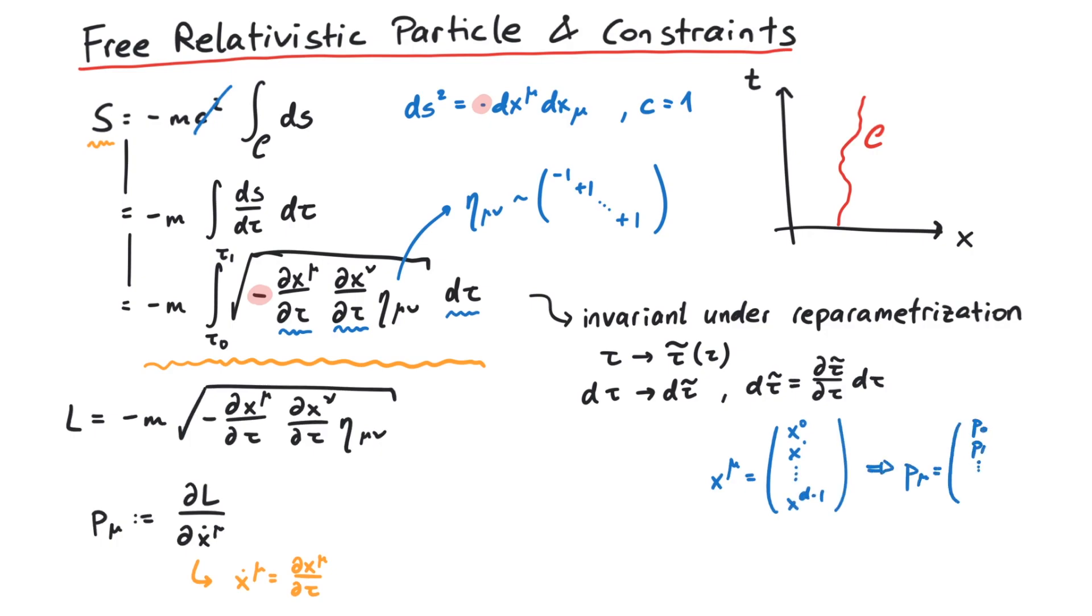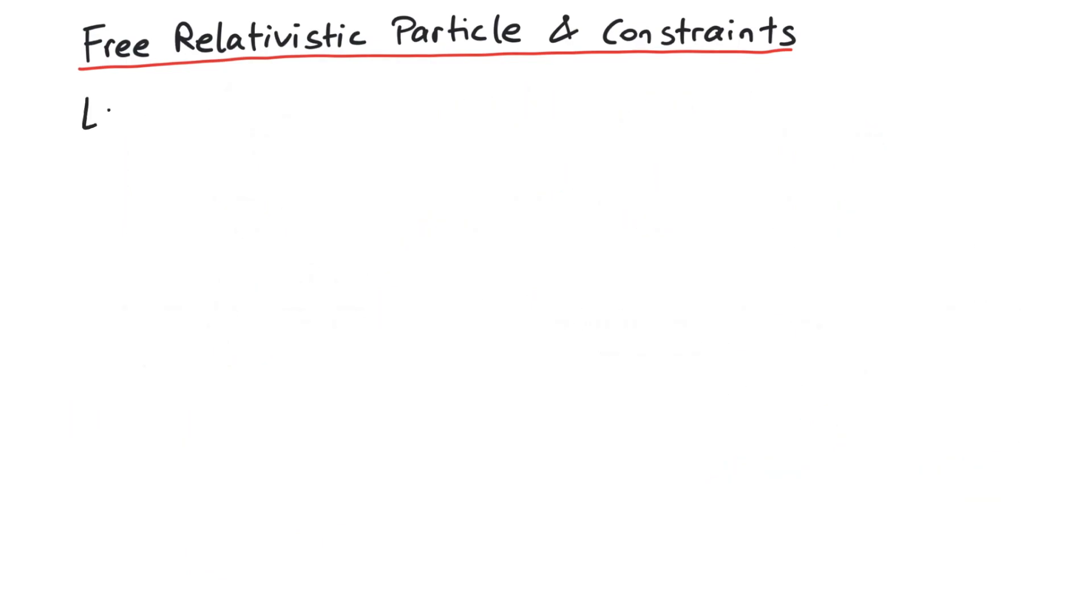This calculation is rather straightforward, and we arrive at m x dot mu divided by the square root of minus x dot squared. These momenta are not completely independent, though.